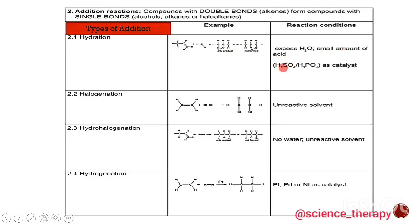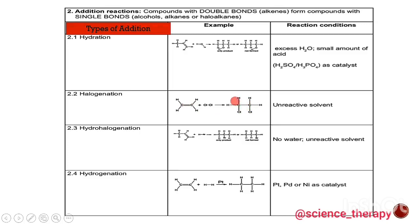The reaction condition for hydration is excess water and a small amount of acid — either sulfuric acid or phosphoric acid — to act as a catalyst to speed up the reaction. The second type of addition reaction is halogenation. Here we have an alkene and we are adding two atoms of chlorine. The double bond breaks to allow in the chlorine atoms, giving us 1,2-dichloroethane.